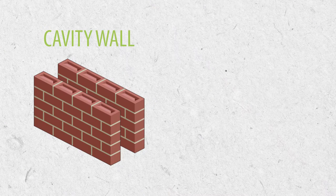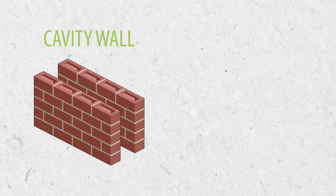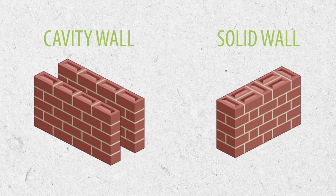A cavity wall, as it says in the name, has a physical cavity in between. Usually it's an air gap, so you've got a skin of brick on the inside of the property and a skin of brick on the outside with an air gap in between. A solid wall, on the other hand, doesn't have this gap, so the bricks are nicely joined together.